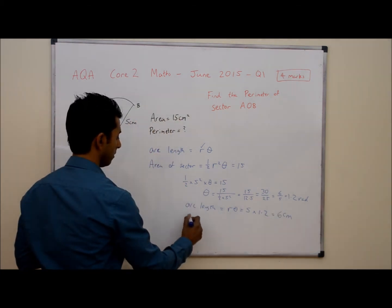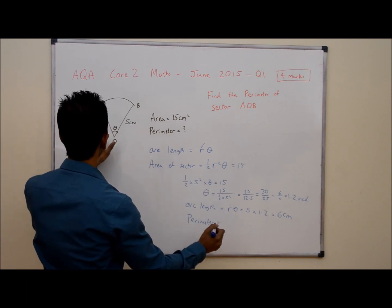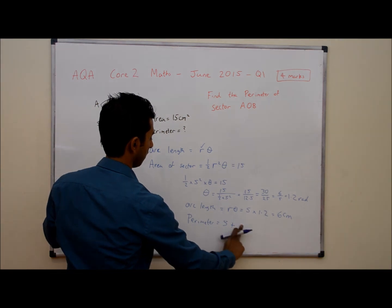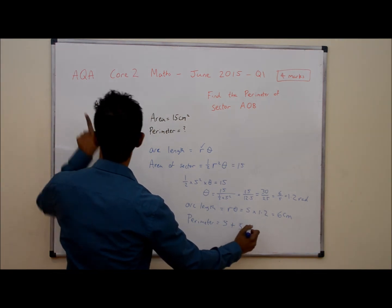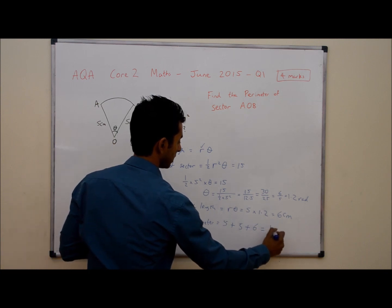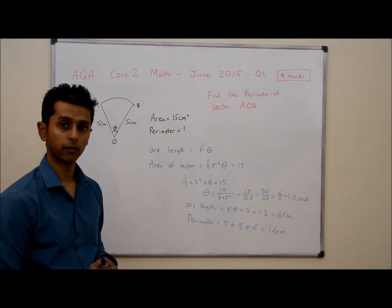Therefore to find the perimeter we do 5 add 5 add the arc length which we've just worked out as 6. So the perimeter is 16 centimeters. And that's all you need to do for that question.